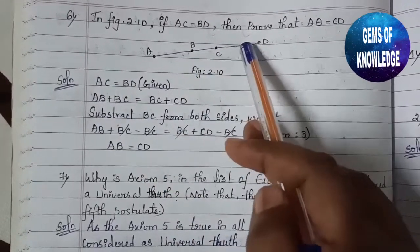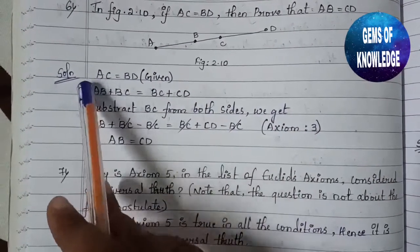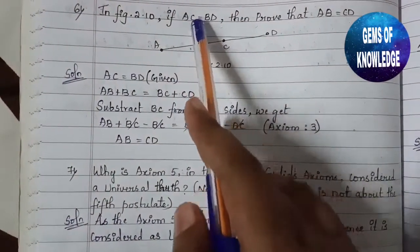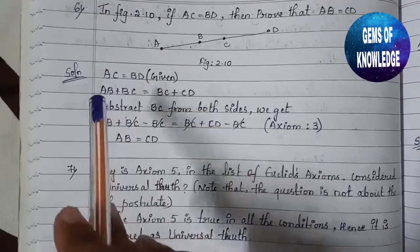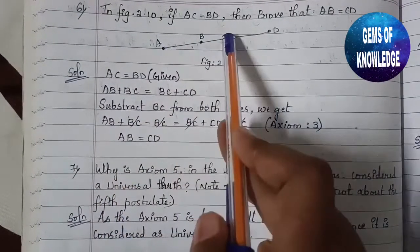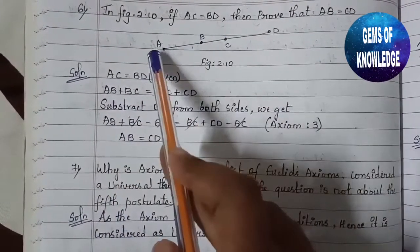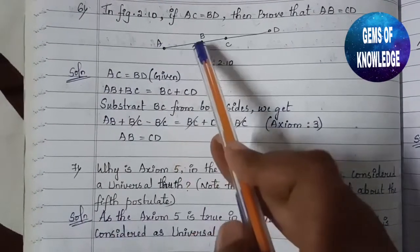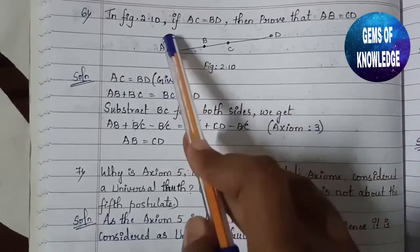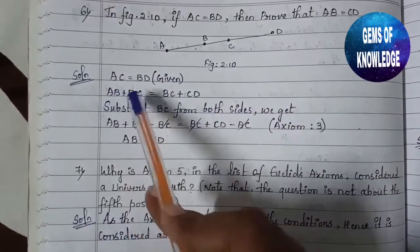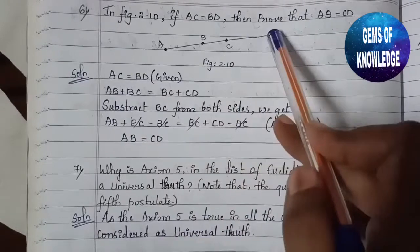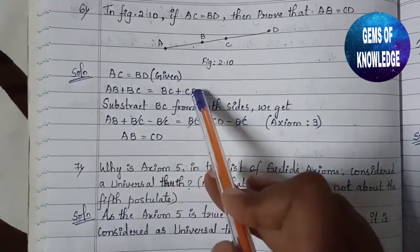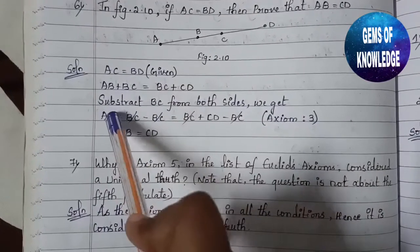As the solution, we already have AC equals BD, which is given. AC is a combination of two parts: AB plus BC. So AB plus BC equals AC, which equals BD. Now BD equals BC plus CD.